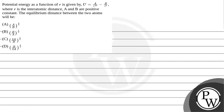Hello! Let's read the given question. The question states that the potential energy as a function of r is given by U equal to a divided by r raised to the power 10, minus b divided by r raised to the power 5, where r is the interatomic distance and a and b are positive constants. The equilibrium distance between the two atoms will be — and the options are given below.